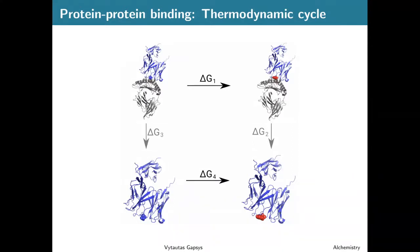The only thing we need to take into account now is that the thermodynamic cycle will be different. We are interested in calculating the delta G values along the horizontal axis — in this case, calculating the change in the binding free energy upon amino acid mutation. This is in the top row: delta G1 for the protein in its bound state (the blue protein bound to the gray protein), and as a reference, the same mutation in the protein in its unbound state.